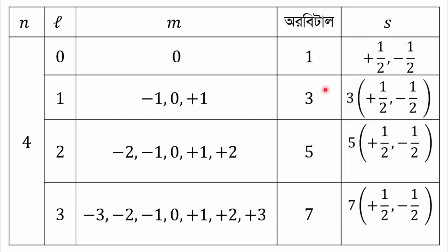If we look at p orbital, we see that the 3p orbital has spin quantum numbers of 3 times plus half and minus half. For the d orbital (1s orbital: 5 into spin quantum number), and f orbital: 7 into the spin quantum number. Quantum number is very important — we need to practice this.